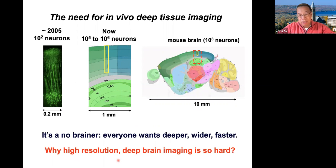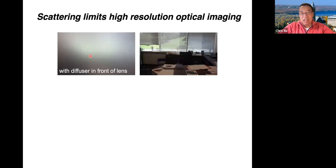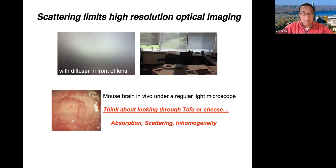So why is high-resolution deep brain imaging so hard? Tissue scattering really limits high spatial resolution optical imaging. I put a diffuser — essentially lens paper — in front of my cell phone camera, and you can see light reaches the camera but we can't see what's going on in the image. It's my office in Clark Hall at Cornell. Even though light passes through the diffuser, there's no high spatial resolution information left. Think about a mouse brain underneath a cranial window — you have to think about looking through a piece of tofu or cheese. It's very hard to see a single neuron underneath a thick piece of tofu.